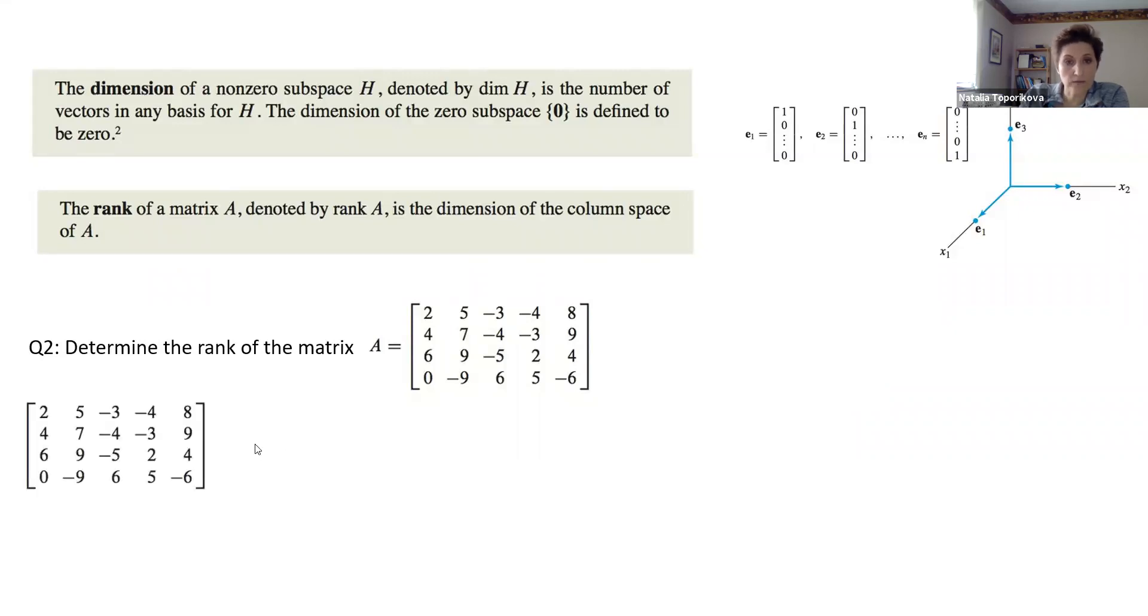To find this dimension, we don't actually need to calculate column space per se, but we need just to find how many pivoting positions or how many free variables there are.